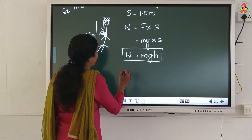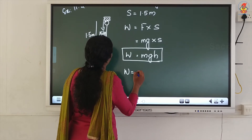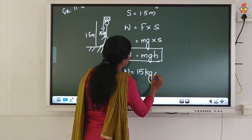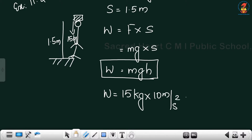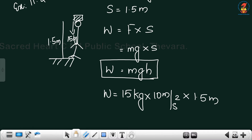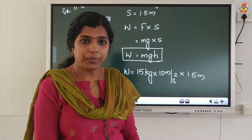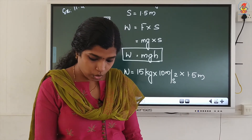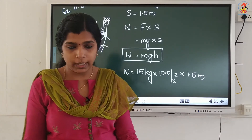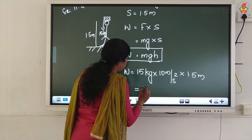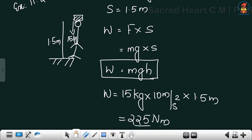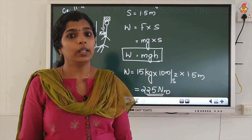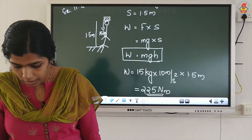W is equal to 15 kg into 10 meter per second squared into 1.5 meter. When you multiply you get the answer as 225 Joule, or 225 Newton meter. Both you can write. 225 Joule or 225 Newton meter.